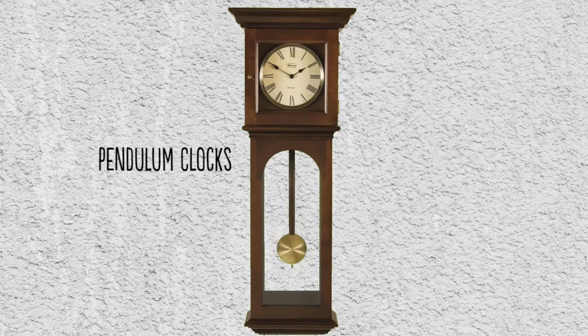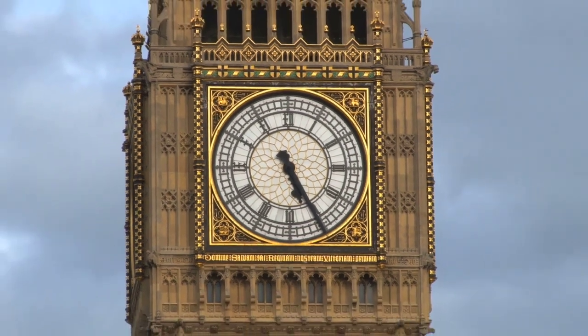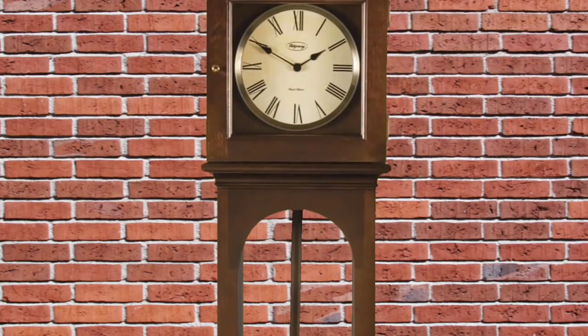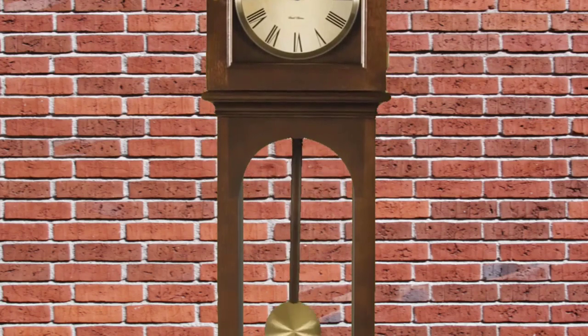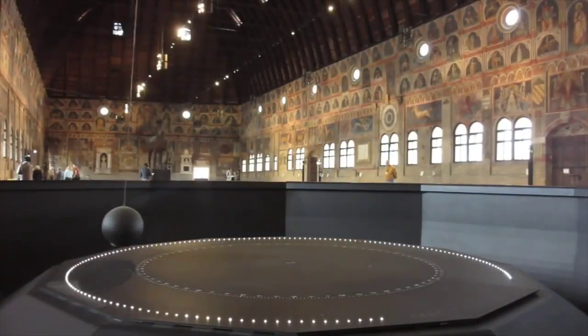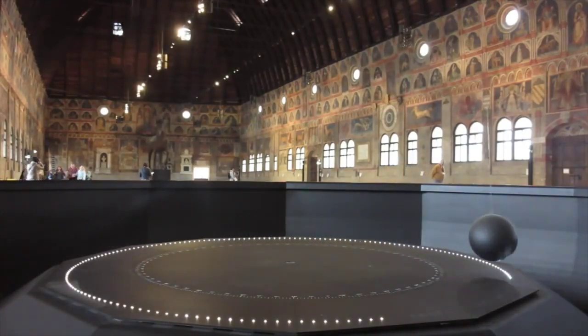Pendulum clocks operate on a simple mechanism. The earliest clocks made use of the swinging pendulum to keep time. A pendulum is a long rod or a weight on a string that swings back and forth.